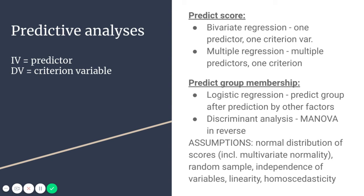For predicting group membership, we're looking more at categorical or nonparametric data where a group could be like gender — male or female — or a certain type of subject within your population. A logistic regression would predict group membership after considering multiple predictor factors across several steps within the analysis. Discriminant analysis is like the MANOVA in reverse — whereas MANOVA says I know what group you're in so how do you differ on these variables, discriminant analysis says I know these variables are different so I can guess what group you're in.